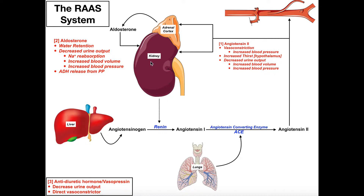The juxtaglomerular cells of the kidney, specifically at the afferent arteriole, are going to release renin. Renin is not a hormone — renin is an enzyme. It catalyzes the conversion of a protein called angiotensinogen into angiotensin 1. The key about angiotensinogen is that it's an inactive protein and it's always found circulating in your blood. We know it's inactive because it ends with the suffix -ogen, meaning we have the inactive form of this protein.